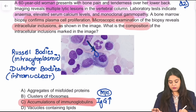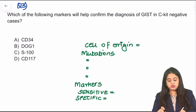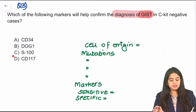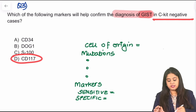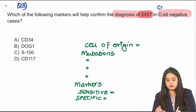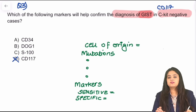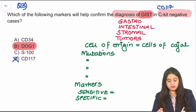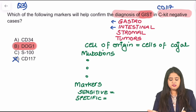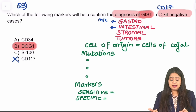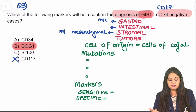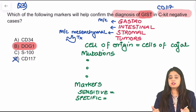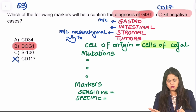Question 3: Which marker helps in the diagnosis of GIST? Don't be in a hurry — c-kit (CD117) is stated to be negative in this question. So we go for the specific marker: DOG1. GIST stands for gastrointestinal stromal tumor — it can occur in the stomach or intestine, but the stomach is more common. It is a mesenchymal tumor, in fact the most common mesenchymal tumor of the stomach, arising from the cells of Cajal — the normal pacemaker cells of the GIT.